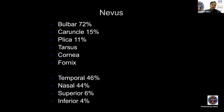From the largest series: bulbar conjunctiva has about 70% of nevi; caruncle about 15%; plica about 11%. Most commonly the temporal bulbar conjunctiva, followed by nasal bulbar conjunctiva. Superior and inferior together contribute only 10%. Tarsal, corneal, and forniceal locations are very uncommon. Caruncle and plica nevi are very small.